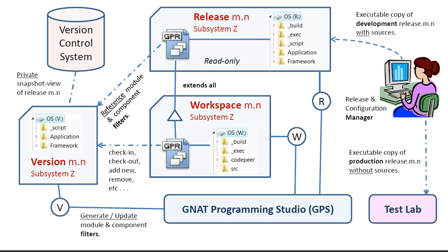It is important to realize that the source filters only apply to code in the release view. These filters are made available to each workspace via the inheritance relationship. Because a workspace has inherited properties from the release, it can be small and simple. This arrangement frees developers from having to understand low-level project file details — only two or three people in a large project need to have this specialized knowledge. Once a workspace project is loaded into GPS and a filter is selected, the developer obtains visibility to the associated units in the release.